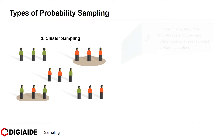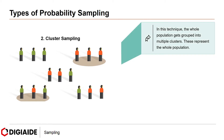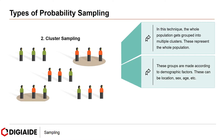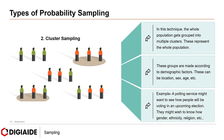Next, cluster sampling. In this technique, the whole population gets grouped into multiple clusters that represent the whole population. These groups are made according to demographic factors such as location, sex, age, etc. For example, a polling service might want to see how many people will be voting in an upcoming election. They might wish to know how gender, ethnicity, religion, etc. would decide the people's voting pattern.